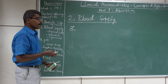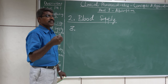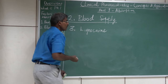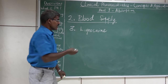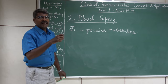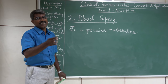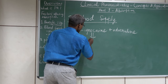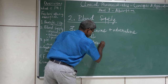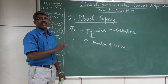The third example: if you reduce the blood supply, systemic absorption can be reduced. This is exploited in the classical example of lignocaine used as a local anesthetic. If we combine lignocaine with adrenaline, which is a vasoconstrictor, it constricts the blood vessels and reduces the amount of drug removed from that site. As a result, the duration of action of lignocaine is increased. This is the third place where this concept is applied therapeutically.